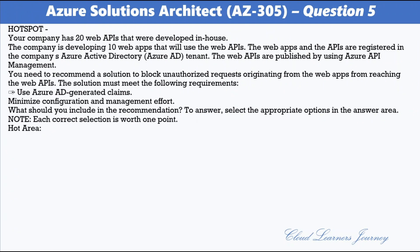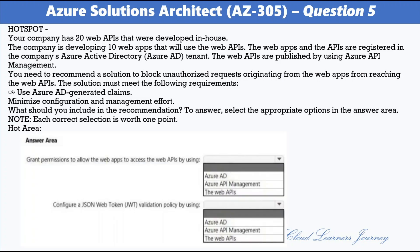Question 5. Your company has 20 web APIs developed in-house, and the company is developing 10 web apps that will use those APIs. The web apps and APIs are registered in the company's Azure Active Directory tenant, and the web APIs are published using Azure API Management. You need to recommend a solution to block unauthorized requests from the web apps from reaching the web APIs using Azure AD generated claims, while minimizing configuration and management effort. The solution is to grant permissions in Azure AD to allow the web apps to access the web APIs, and configure a JSON Web Token validation policy using Azure API Management to pre-authorize requests. If a request doesn't have a valid token, API Management blocks it.